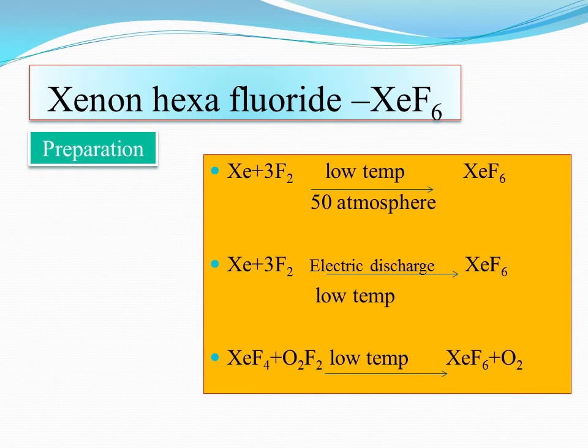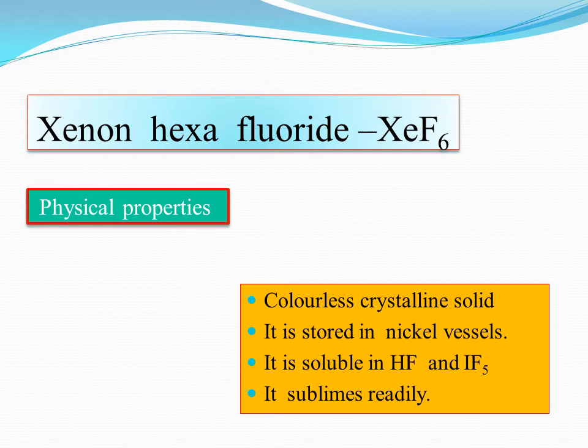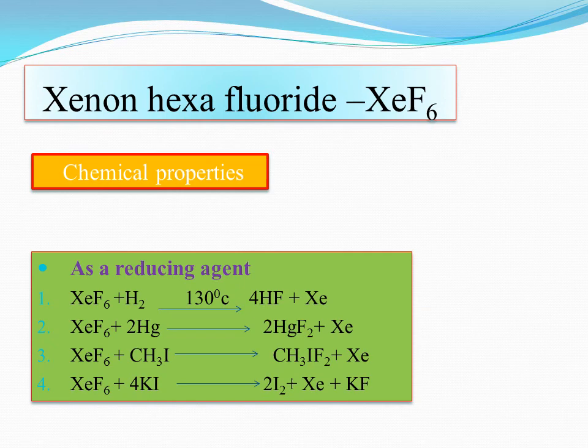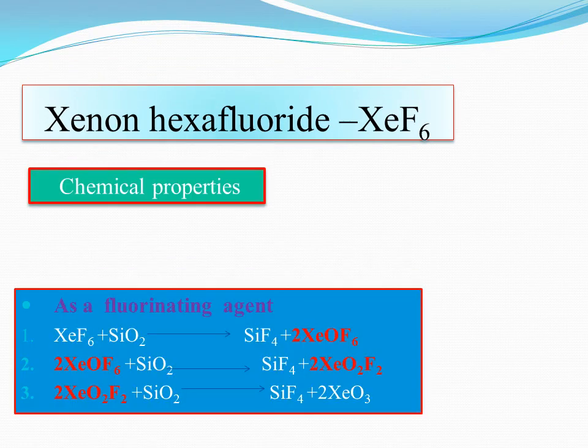Xenon hexafluoride (XeF6) preparation: at low temperature, 50 atmospheres, using electric discharge, yielding XeF6. Physical properties: colorless crystalline solid, stored in nickel vessels, soluble in HF and IF5, and sublimes. Chemical properties: as a reducing agent, hydrogen treatment at 130 degrees centigrade gives HF and Xe. It reacts with mercury fluoride; as a fluorinating agent it reacts with SiO2 to give SiF4.